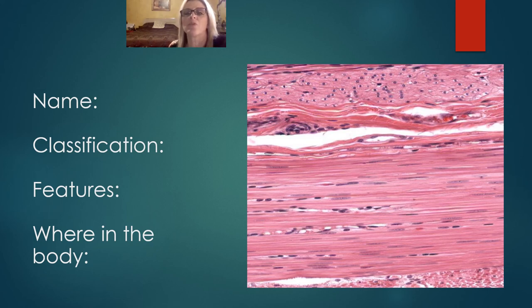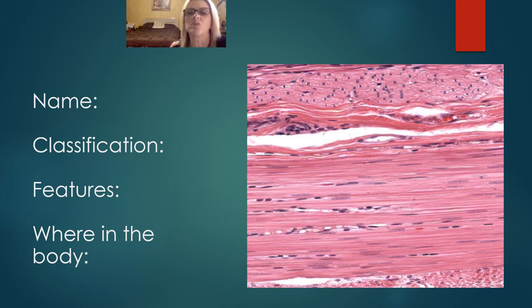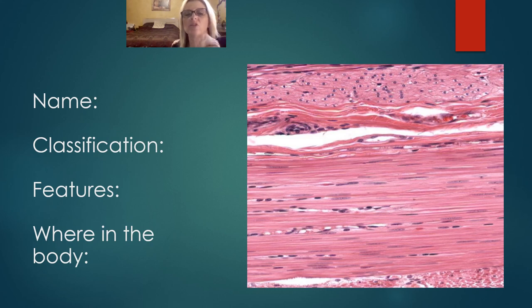The bottom layer here is going to be relaxed smooth muscle — the nuclei are elongated. The top is going to be that circular muscle — you're going to have rounded ends on the bottom. When contracted, the nuclei can actually spiral or kink. Your cytoplasm is pink.